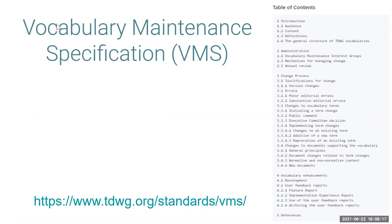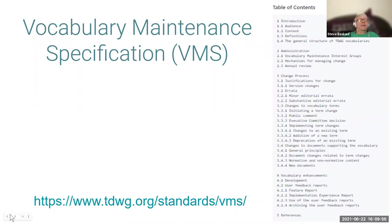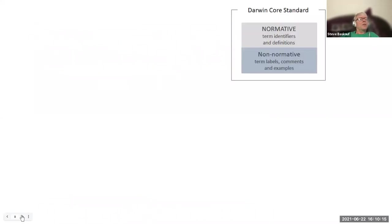It seems we lost John. I'll go ahead and speak and if John is able to take back over that would be fine. The Vocabulary Maintenance Specification is an overarching specification that applies to all of the vocabulary standards, not just DarwinCore. That's basically what governs the process.